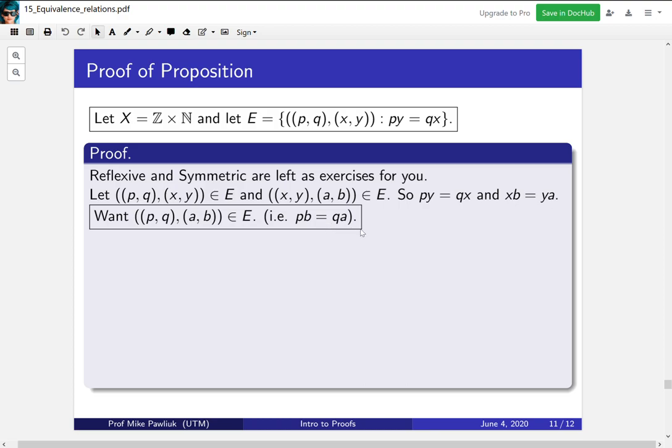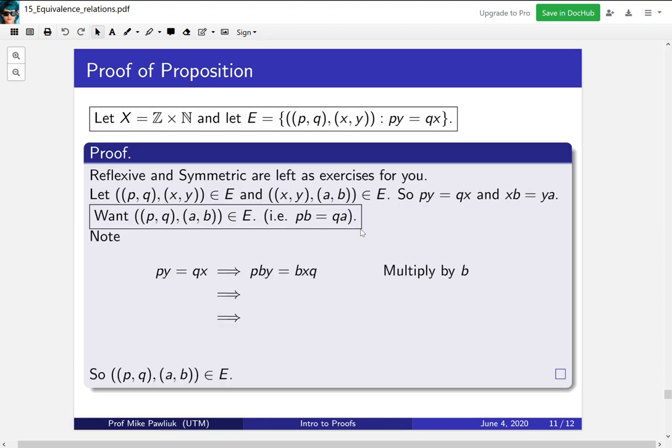This proof always messes me up, and I'm glad that I get to do a video about it, because when I do it in class, I often make mistakes. There's like lots of fiddly things, and you can easily make a mistake. So what I encourage you to do afterwards is, without looking at this proof, try to reprove it, and you'll see that there's lots of different places you can go wrong, and there's lots of different choices you can make.